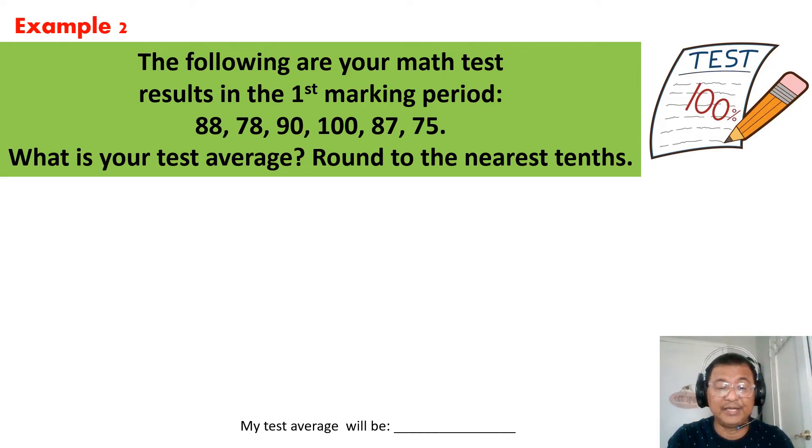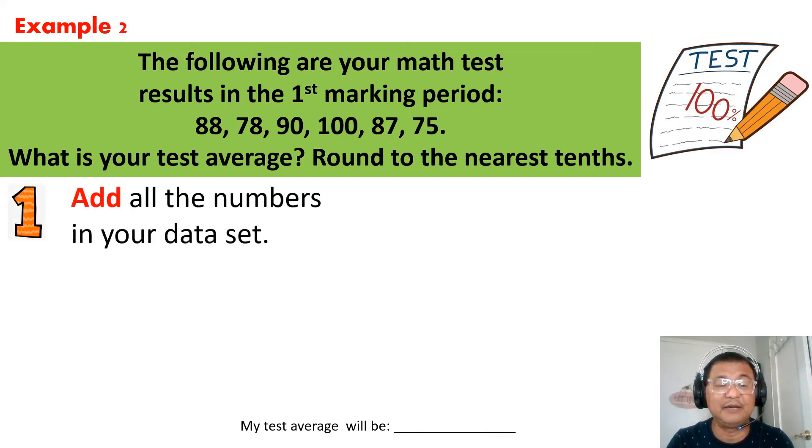Let's now do example number two. The following are your math test results in the first marking period: 88, 78, 90, 100, 87, and 75. What is your test average or your mean? Round to the nearest tenths. You know you have to add all the numbers in the data set and if you add all of this, your total or your sum will be 518.